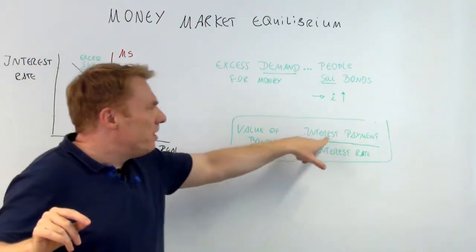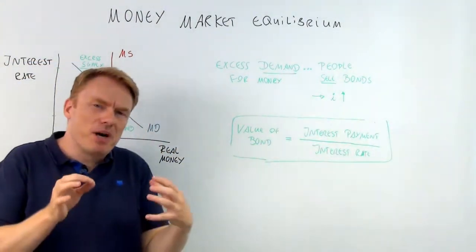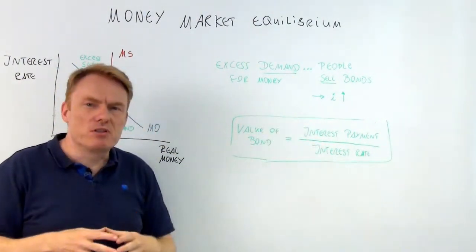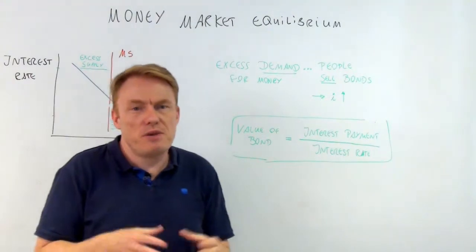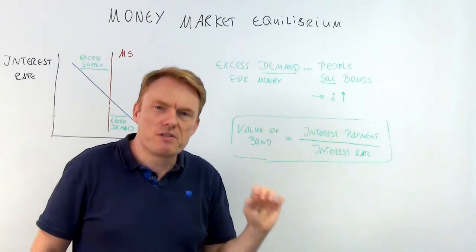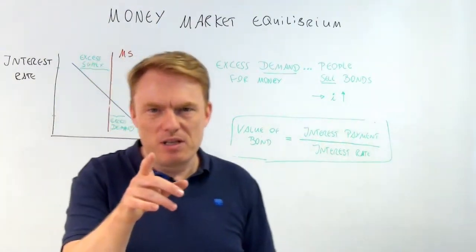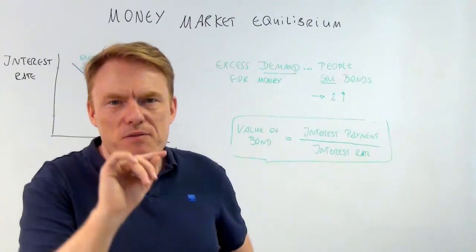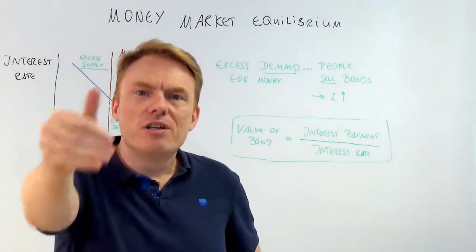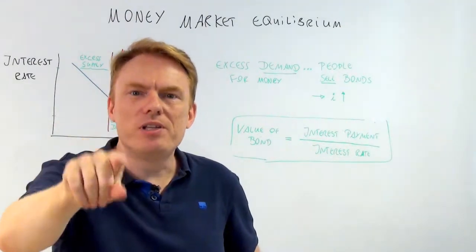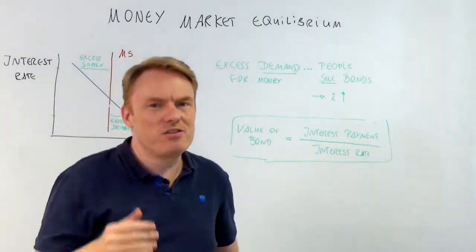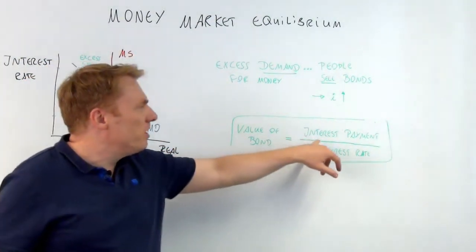Now, the value of a bond. If you get an interest payment from a bond that lasts eternally — say you get interest payments of $50 a year and the interest rate is 10% — what's the value of the bond? Say I give you $50 a year, each year, from now on, eternally: in one year, in two years, in three years, in four years, and so on.